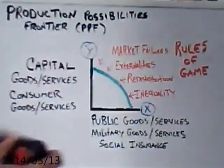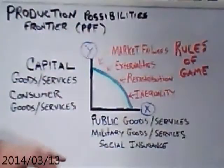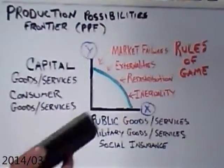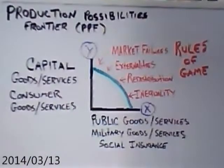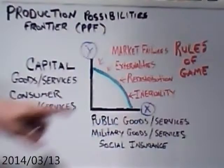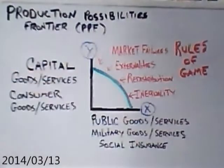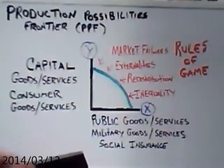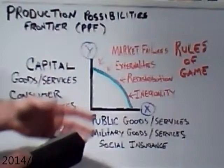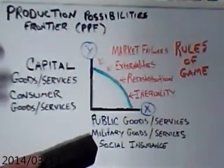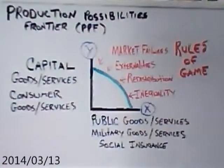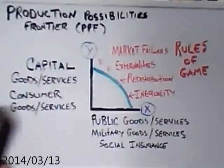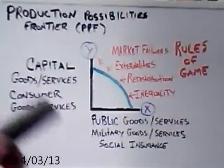Redistribution is set up through the Constitution — taxes can be laid and levied to produce public goods, services, and military goods and services. Look at the Tea Party: those concerned about the Patient Protection and Affordable Care Act were very concerned about redistribution and taxes. You need redistribution to some extent because it's written into the law. You're not going to get rid of it — you can argue about how far it should go, but you're not going to eliminate it entirely.